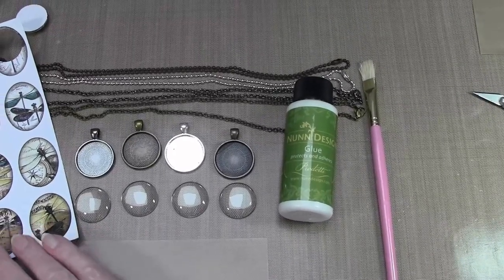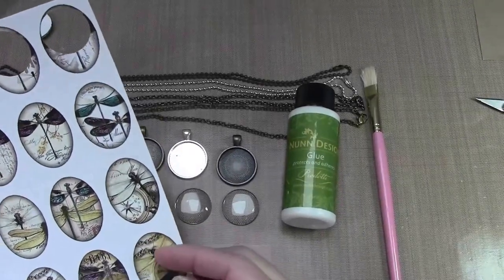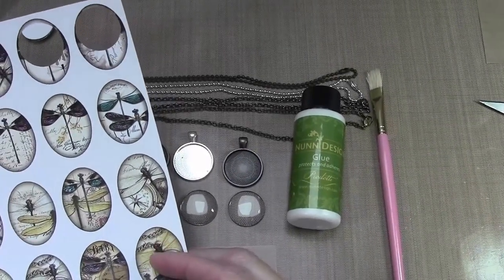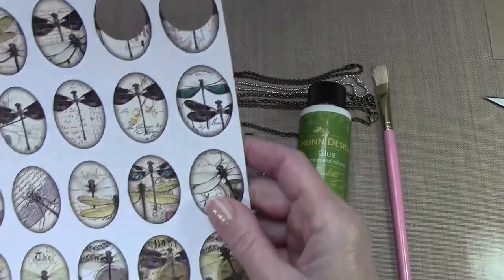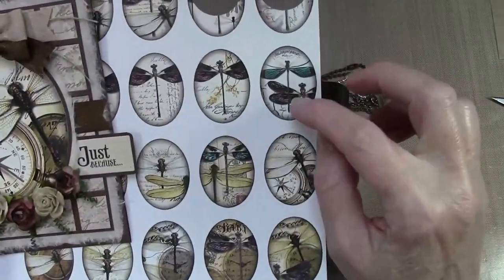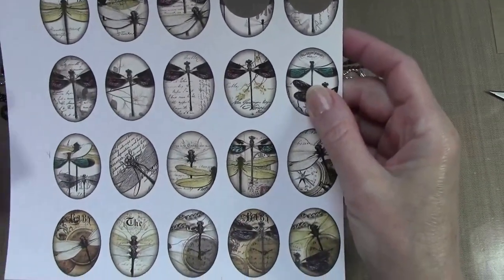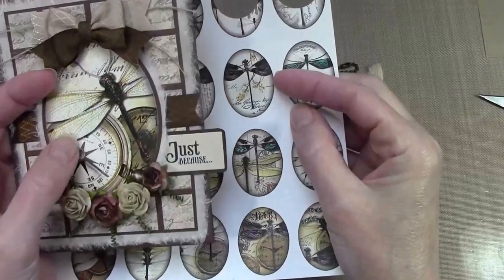There's a wide variety of bottle cap or pendant digital collage sheets from a multitude of sellers on Etsy. I originally purchased the digis with the idea that I was going to make cards with them and they are really high resolution images, so they do enlarge really well.